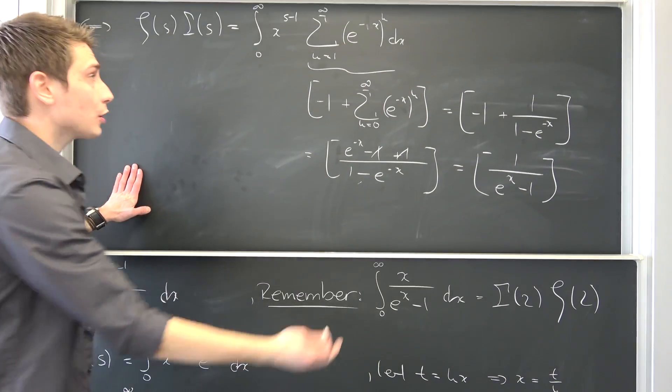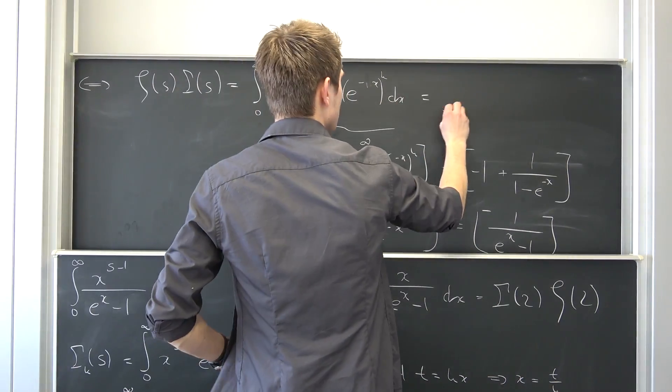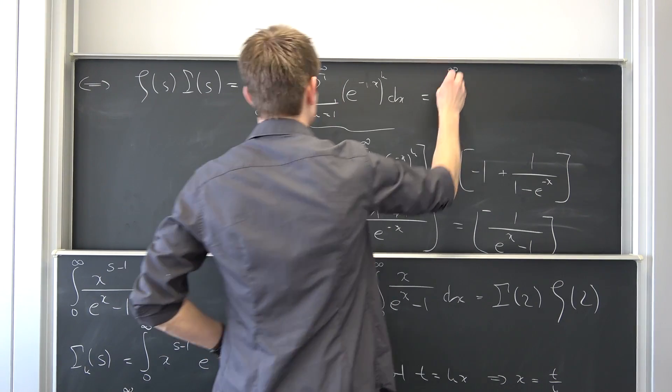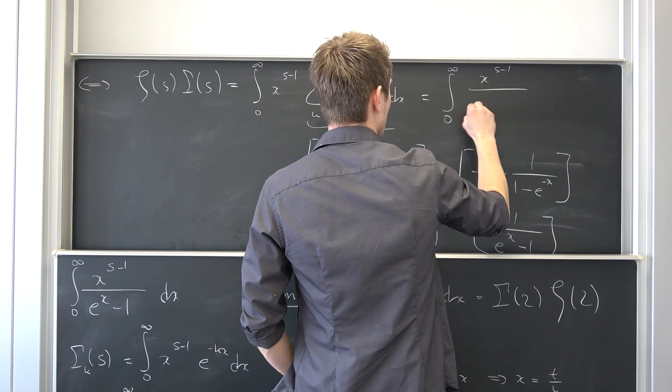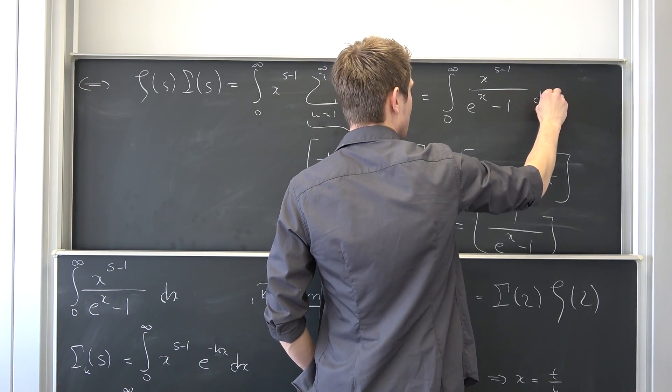Meaning, overall, this integral right here is going to turn into the integral from 0 to infinity of x to the s minus 1 power over e to the x minus 1 dx.